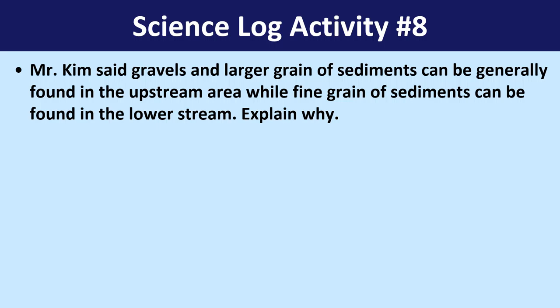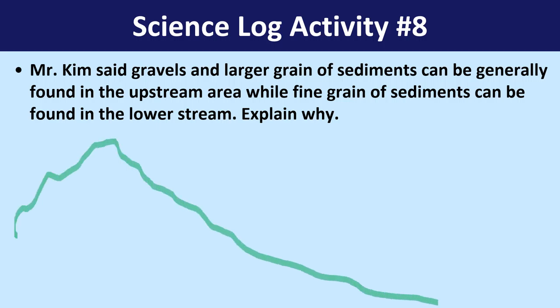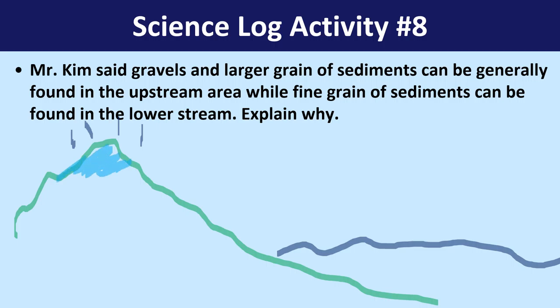So in this question, Mr. Kim said gravels — a larger grain of sediment — can be generally found in upstream compared to fine grain like sands, which can be found in the lower stream, and I asked you to explain why. So related to this, without further ado, let me draw some diagrams. For instance, this is a sea. We know that when it comes to precipitation or any type of glacier, they're located on top of the mountain. Think about any type of rocky mountain range too, to be fair.